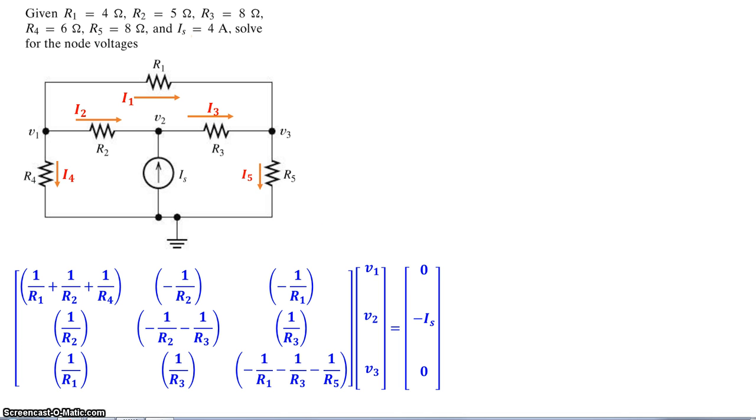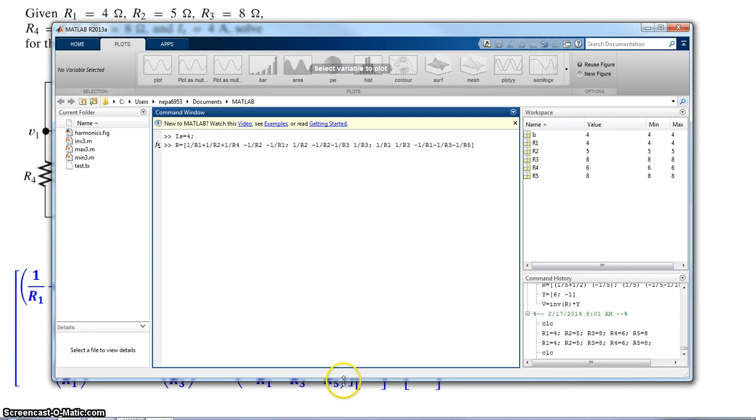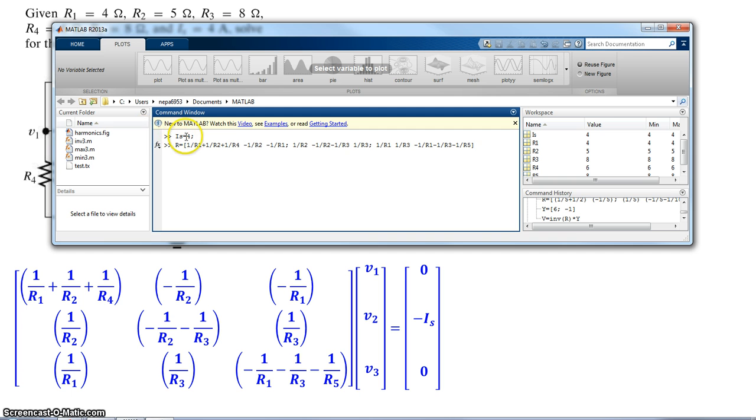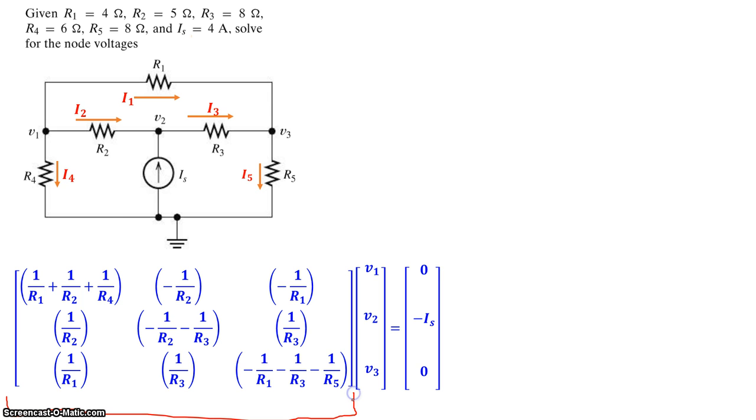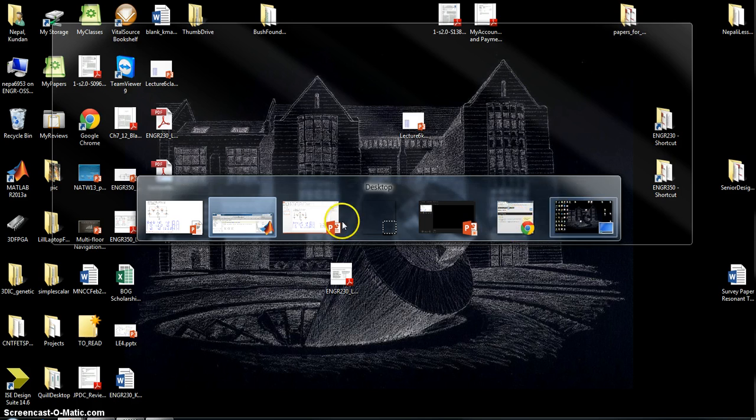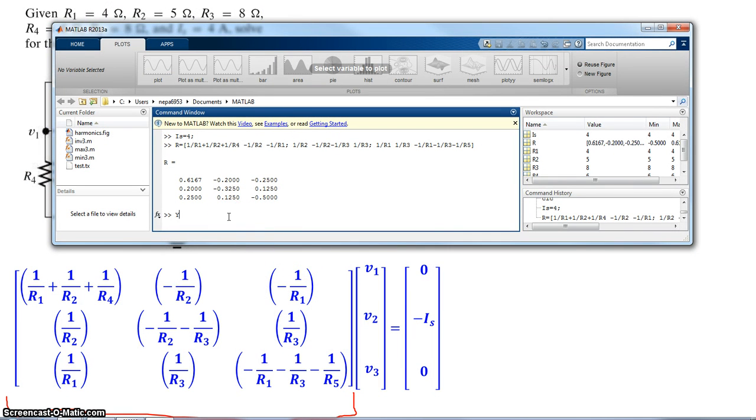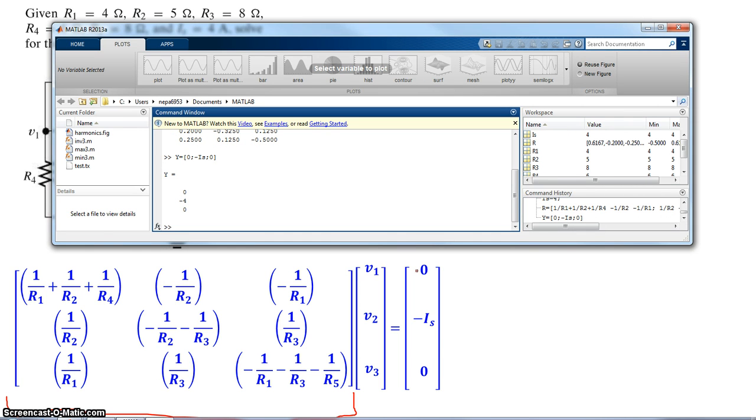So I have MATLAB right here. What I'm going to do is basically enter the values. I've already entered the values of the resistors. R is given as R1, R2, R4, and then I have minus R2, minus R1. So I've entered the values of R. So that's what I get. For this big matrix, right here. Now we need to do y is equal to, let's enter 0. So I'm entering this matrix right here, 0, minus Is, 0, there we go. So we've entered that.